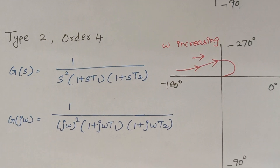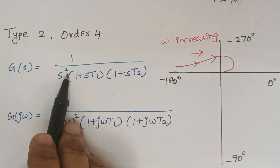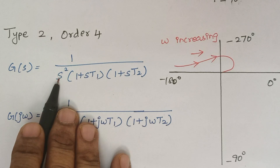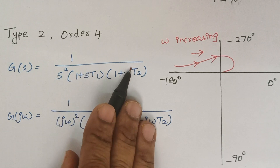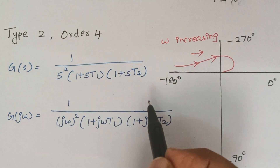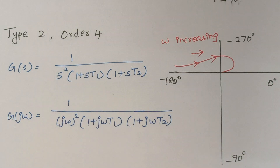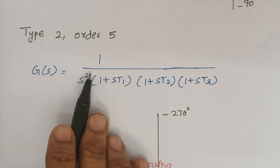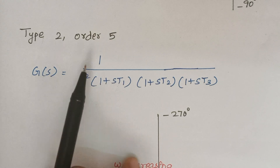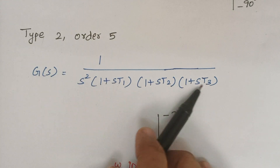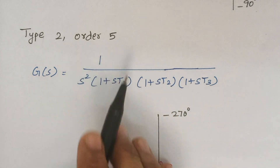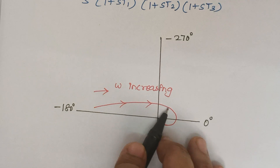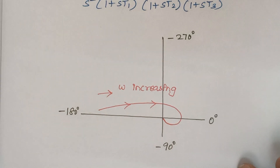For type 2, order 4: we have s squared in the denominator, so the type is 2. Multiplying all the terms — s squared, s to the power 1, and s to the power 1 — gives 2 plus 1 plus 1 equals 4, so the order is 4. The polar plot will look accordingly. For type 2, order 5: again s squared gives type 2, and multiplying all terms gives a maximum power of s as 5, so the order is 5. The polar plot for this type will start and end along the 0 degree reference axis.